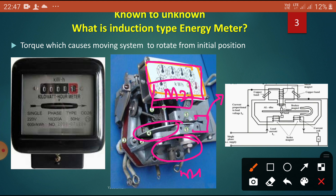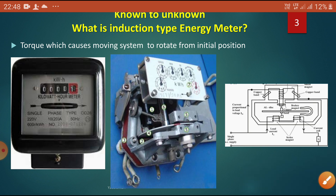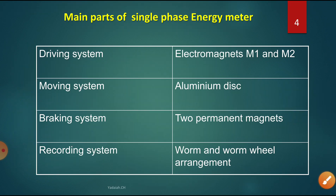This can be drawn in a circuit diagram. As you have already seen, the driving system uses electromagnets M1 and M2. The moving system consists of the aluminum disc. The braking system uses two permanent magnets. The recording system has a worm and worm wheel arrangement.